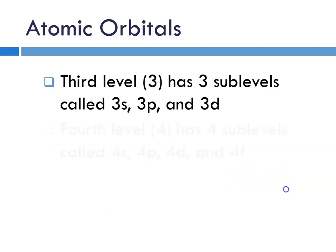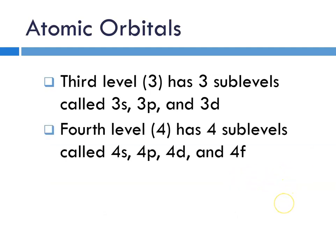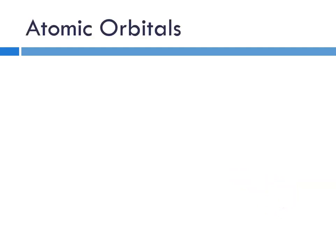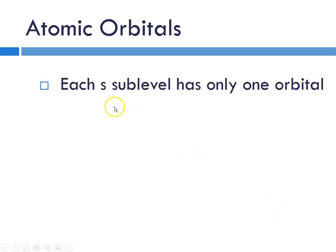The third level has three sublevels, S, P, and D. And the fourth level has four sublevels, S, P, D, and F. And each sublevel has a specific number of orbitals. So the S sublevel only has one orbital.